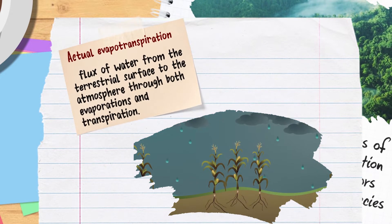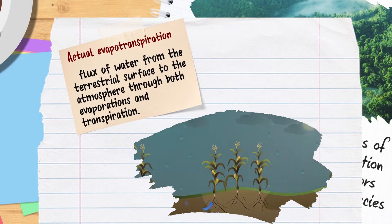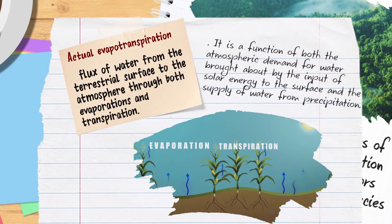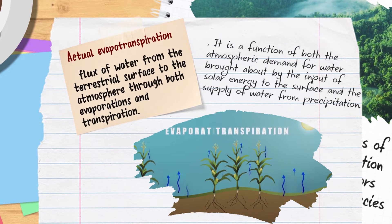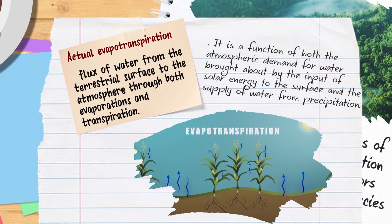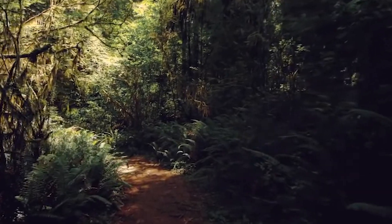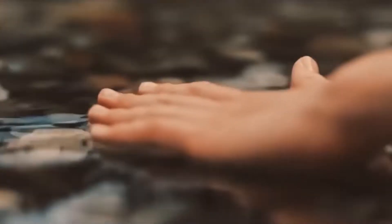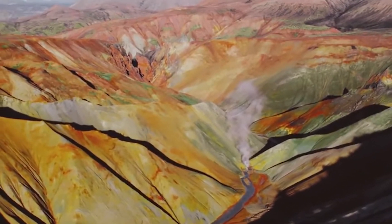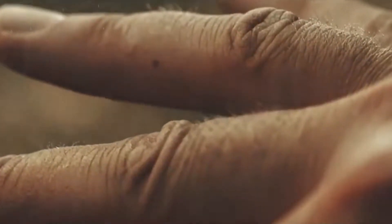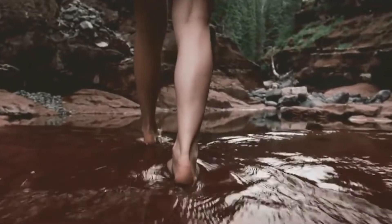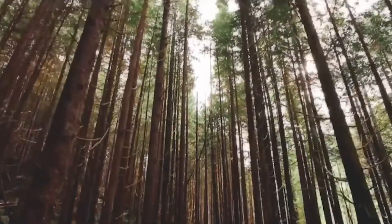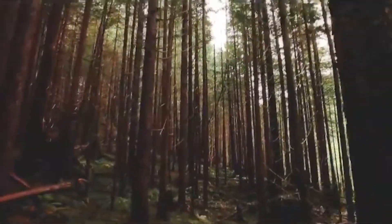Actual evapotranspiration is the flux of water from the terrestrial surface to the atmosphere through both evaporation and transpiration. It is a function of both the atmospheric demand for water brought about by the input of solar energy to the surface and the supply of water from precipitation. A significant relationship exists between measures of primary productivity and species richness at continental and global scales. Geographic patterns of both terrestrial plants and animals are positively related to net primary productivity, indicating that favorable conditions for photosynthesis and plant growth are capable of supporting a greater number of tree species.